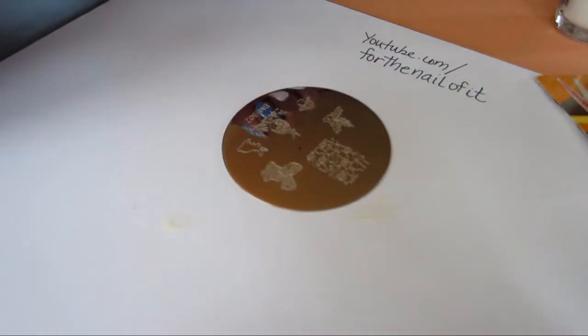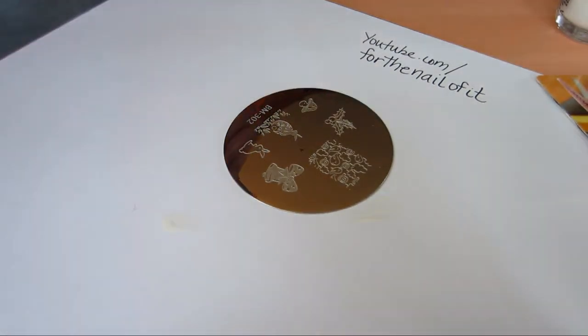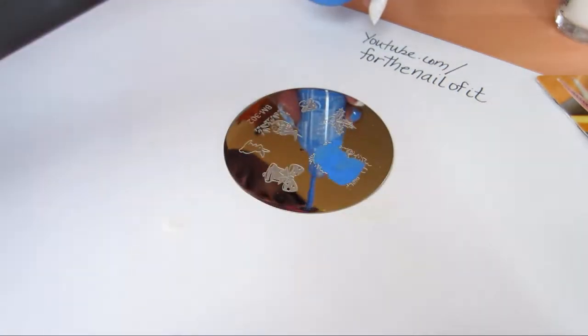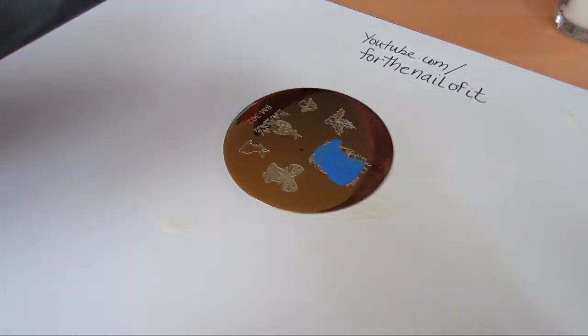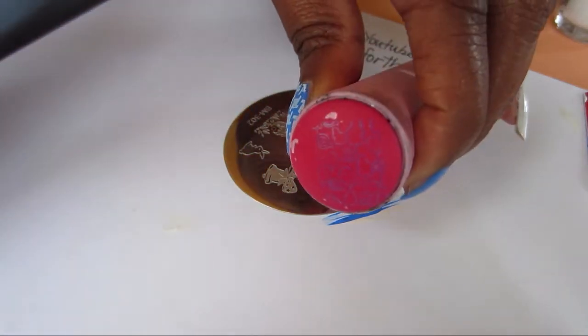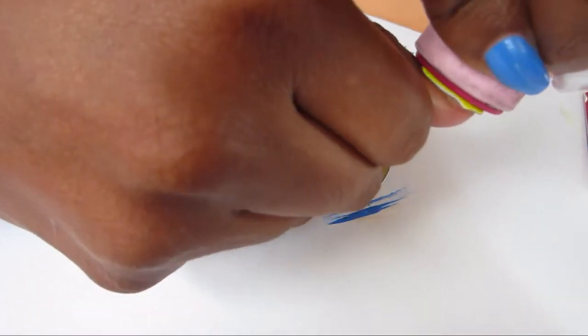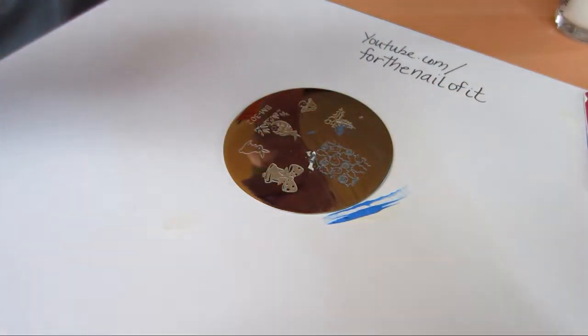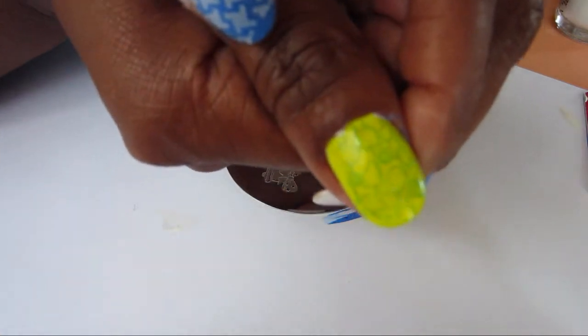So I think next we'll use plate 302 and we're going to use this little chick right here. I'm going to use this Sally Hansen Pacific Blue polish. I've never tried stamping with this before. And that picked up okay. Might not be able to see it very well. I'm going to stamp over this neon yellow from Sinful Colors. And that stamped out really well. I think that's really cute.